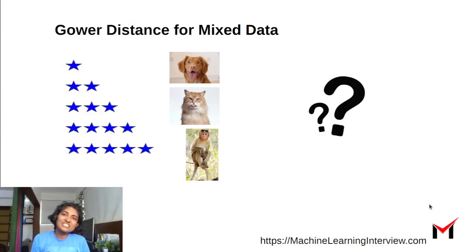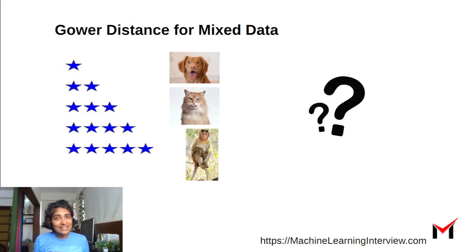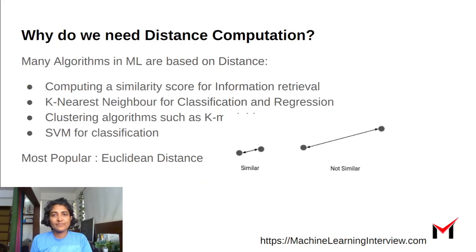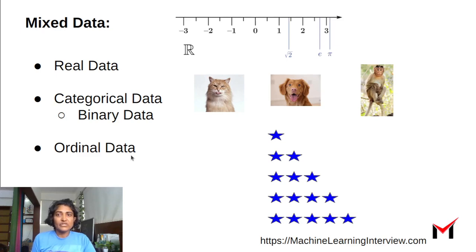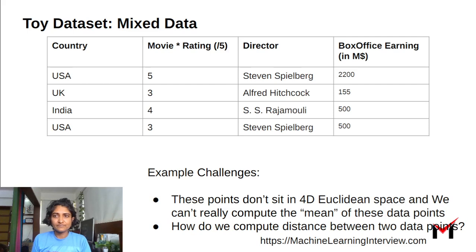The Gower distance for mixed data. So what do we mean by mixed data? Mixed data is data where different features of the data set have different types. Let's see an example, a toy data set of mixed data.